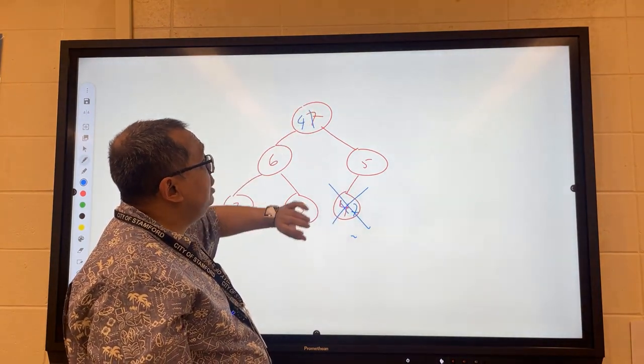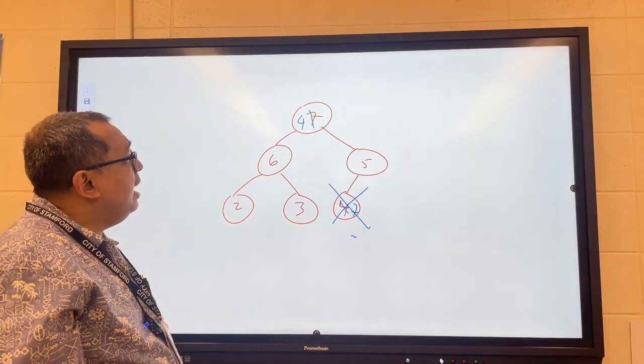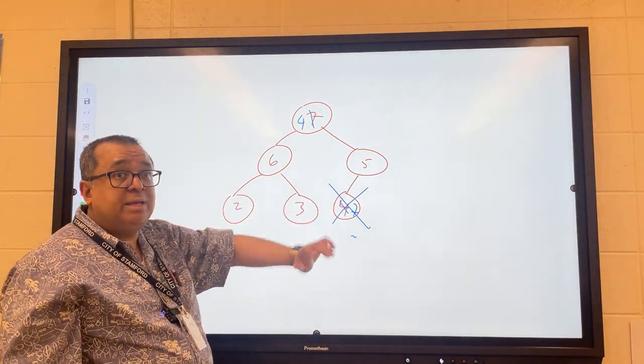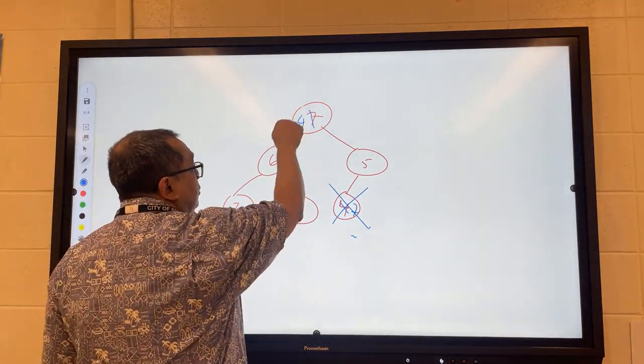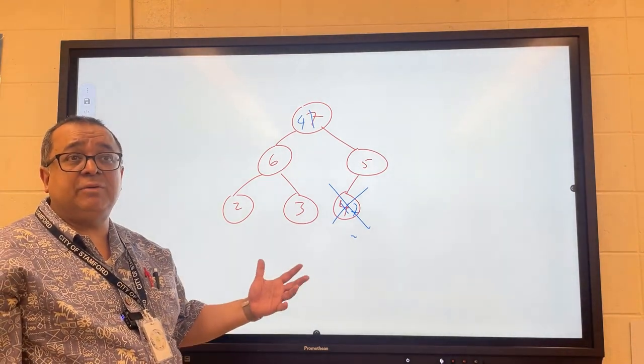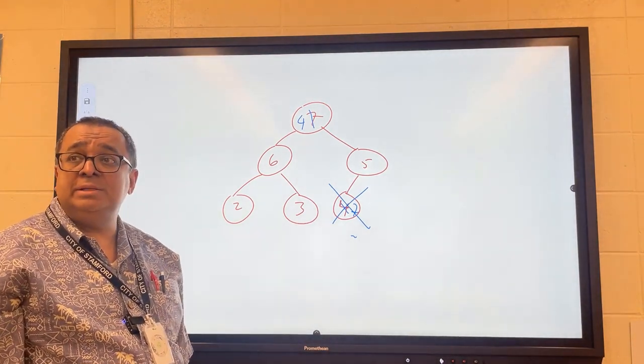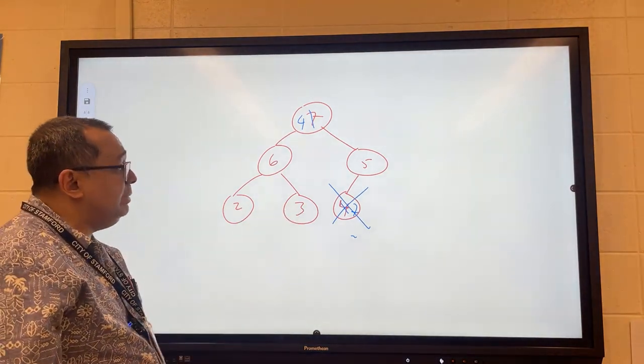Instead of bubbling up, what do we need to do? I swapped the seven and four, deleted the seven, but now the four is out of position. What do I need to do to restore heap properties? Bubble it downward. Can I arbitrarily decide which path to swap it with, or is there a specific rule? Since this is a max heap, I have to pick the bigger one.